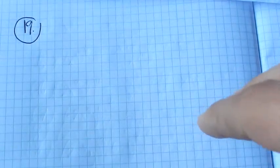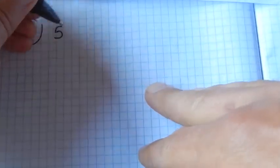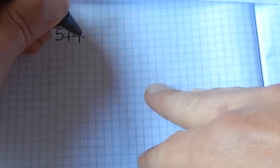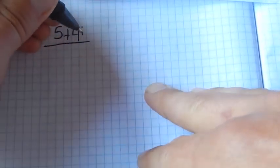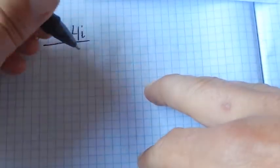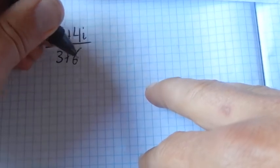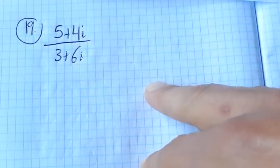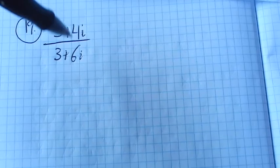This is Math 98 practice test number two, problem number 19, and we are supposed to simplify (5 + 4i) over (3 + 6i). In order to simplify this, I have to make sure there are no imaginary numbers left in the denominator.